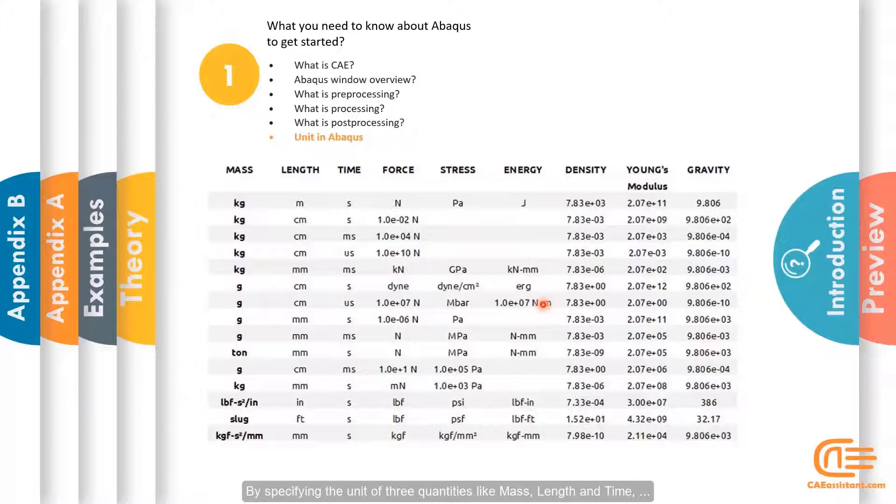By specifying the unit of three quantities like mass, length and time, the unit of the other quantities is determined based on their physical relation.